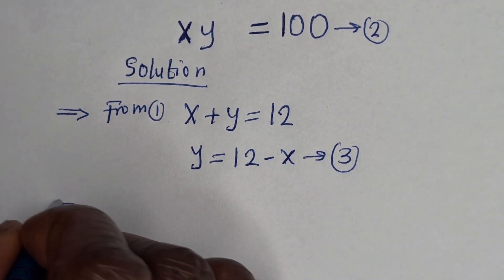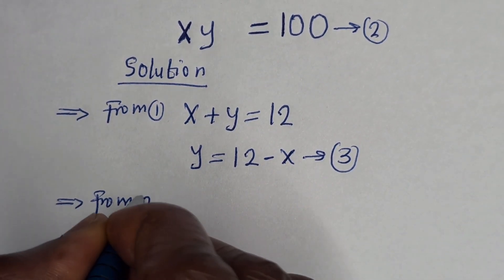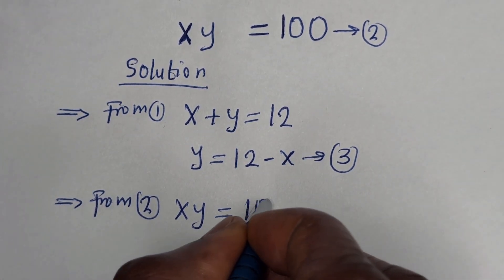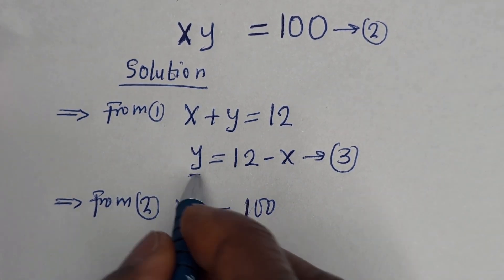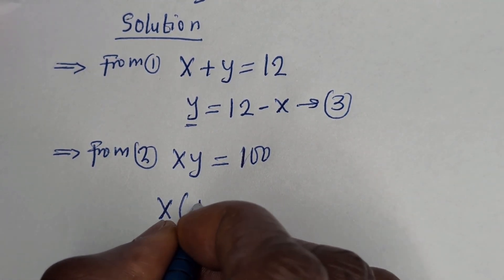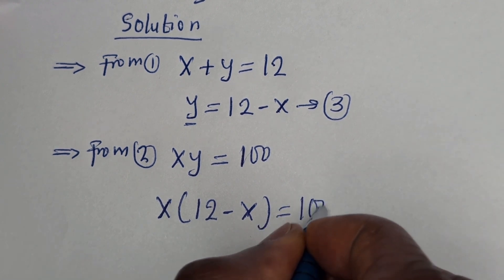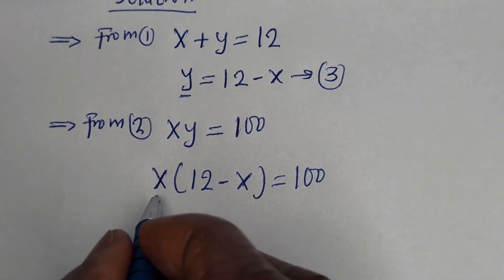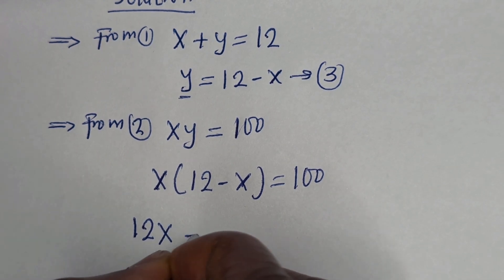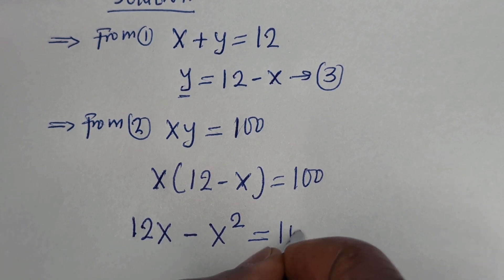Then from equation 2, SY is equal to 100. Let us substitute for Y: S multiplied by (12 minus S) is equal to 100. Expanding: 12S minus S squared is equal to 100.